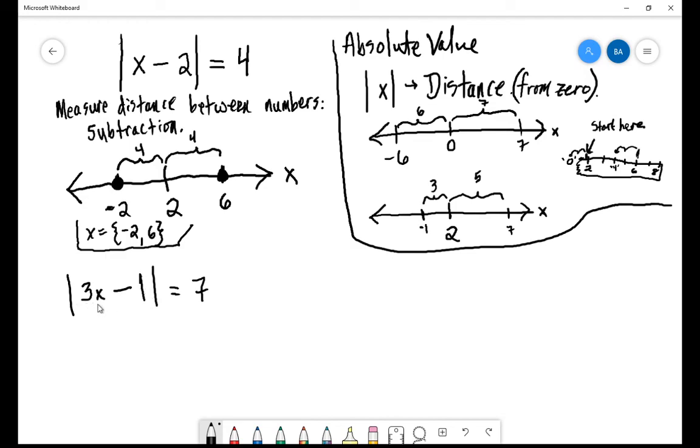So let's do the absolute value of 3x minus 1 is equal to 7. Here we're looking at finding the distance between these two objects, 3x over here and 1 over here. So the distance between some value 3x, we don't know where it is, and 1, which we know exactly where it is, is going to exactly be equal to 7. So again, we go 7 in the positive direction, 7 in the negative direction.